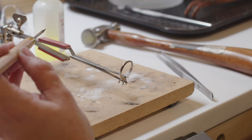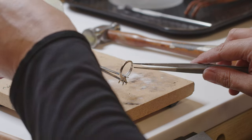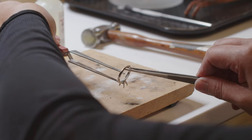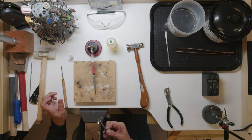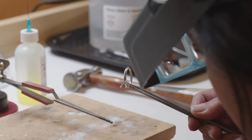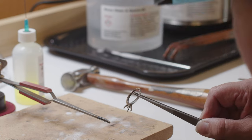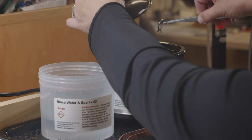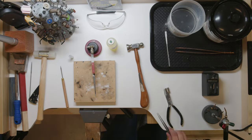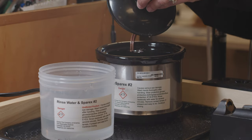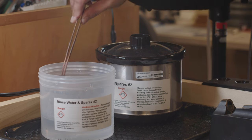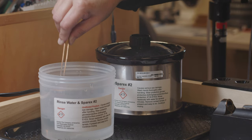You want to make sure that the solder has flowed all the way through, so I'm just going to take it out here and I'm going to check it and make sure that it flowed all the way through. The pickle is going to remove the fire coating that's on the piece. Let that sit in here a few minutes.